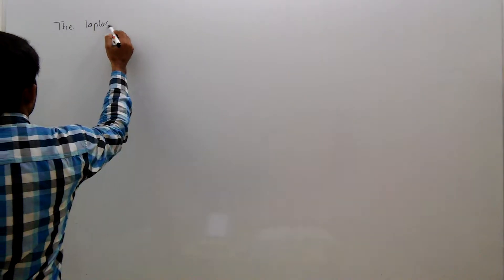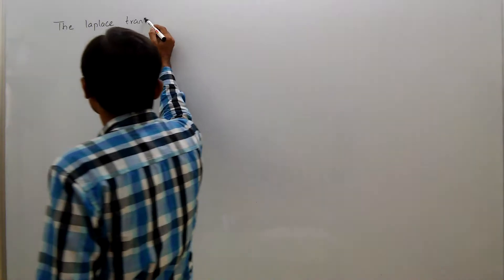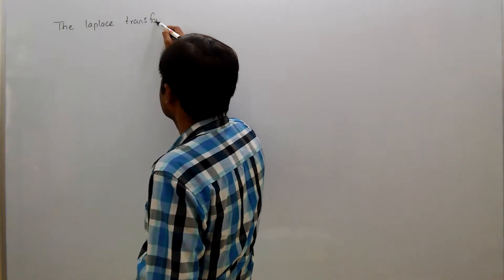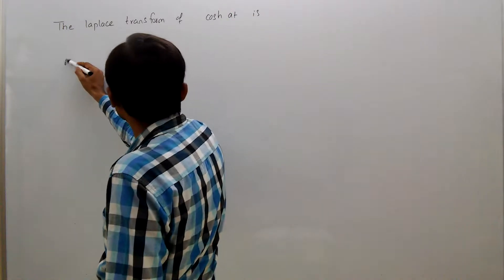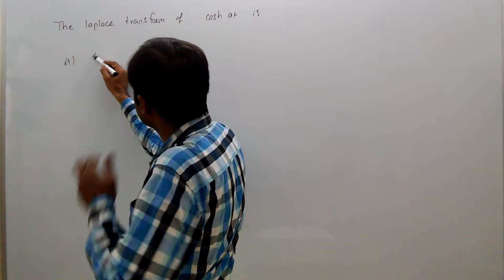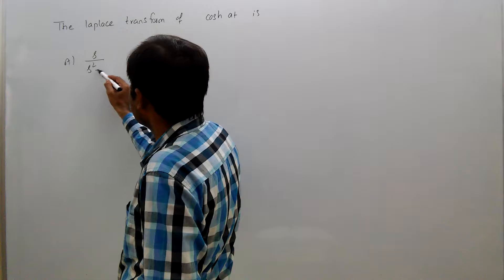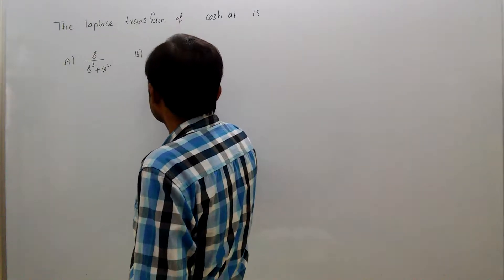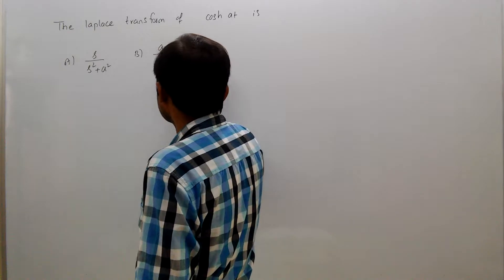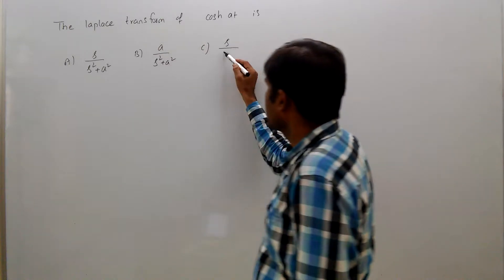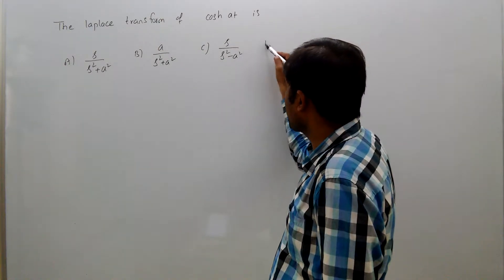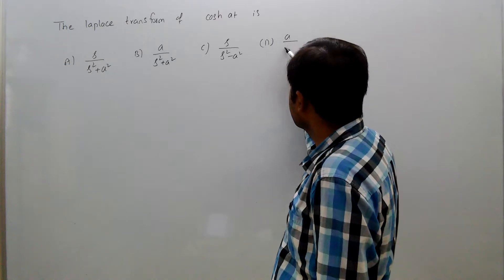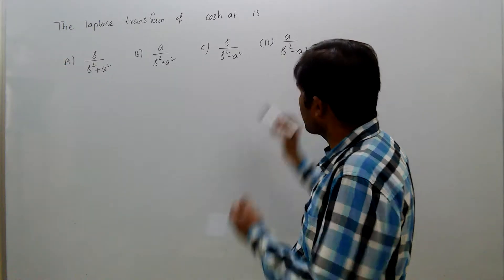The Laplace transform of cos(at) is: option A, S by S squared plus S squared; option B, A by S squared plus A squared; option C, S by S squared minus A squared; option D, A by S squared minus A squared.